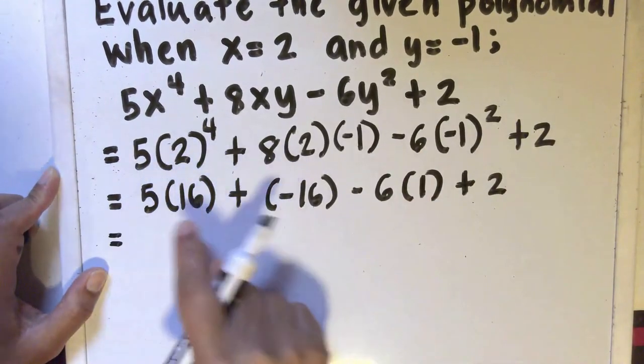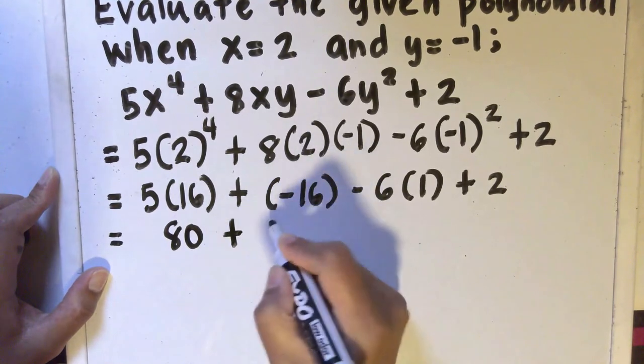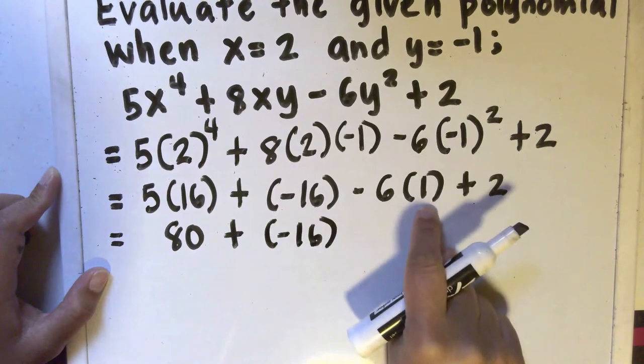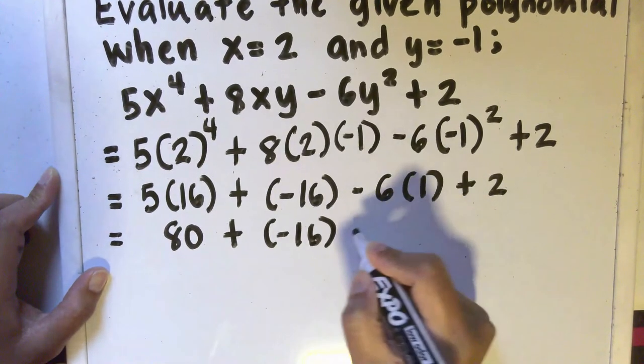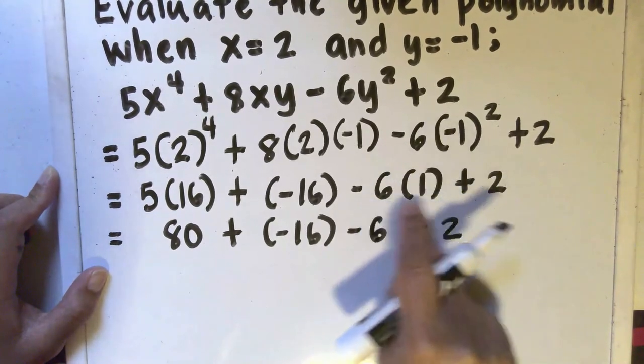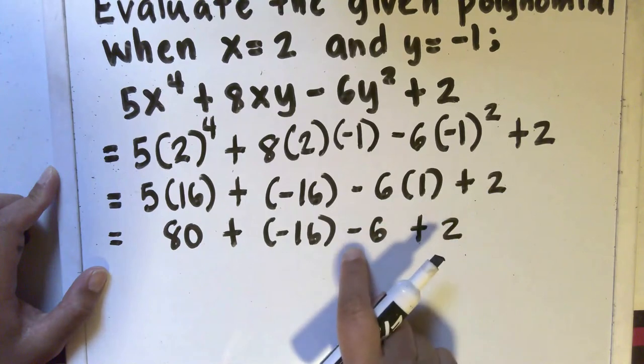And then 5 times 16 is 80 plus negative 16. 6 times 1 is 6, so I will put minus 6 plus 2. Here, you can also look at it as negative 6 times 1, so it will be negative 6.